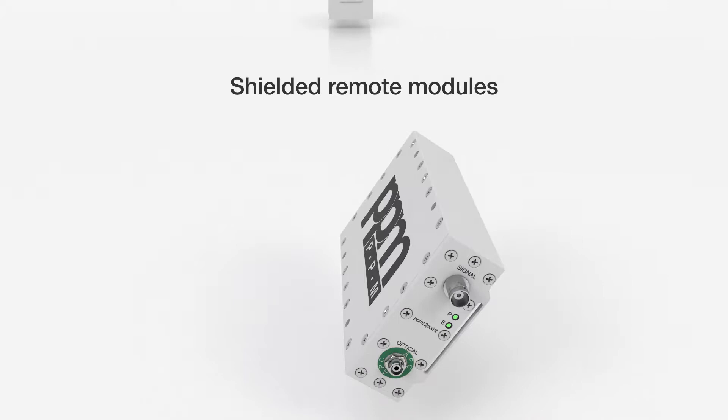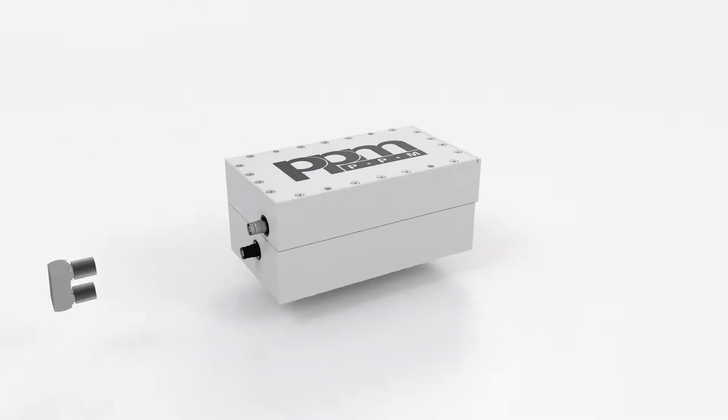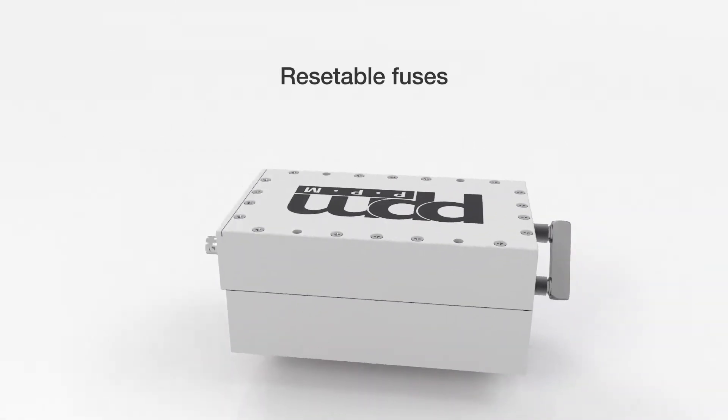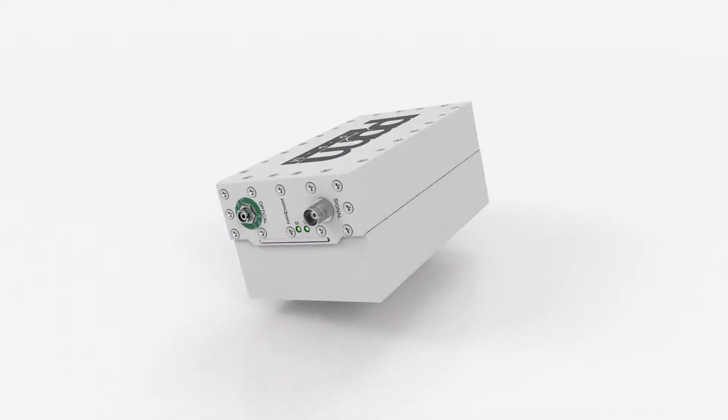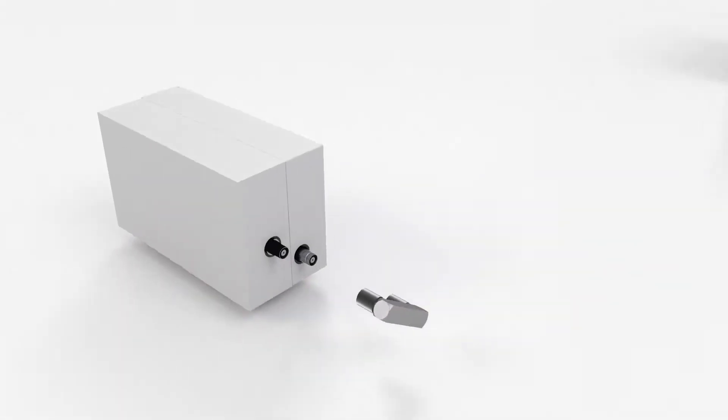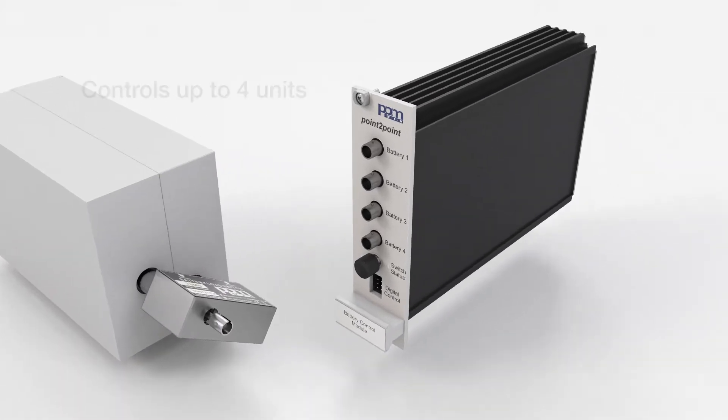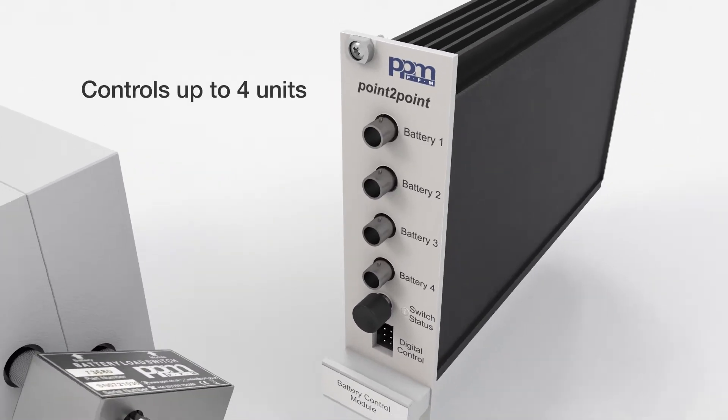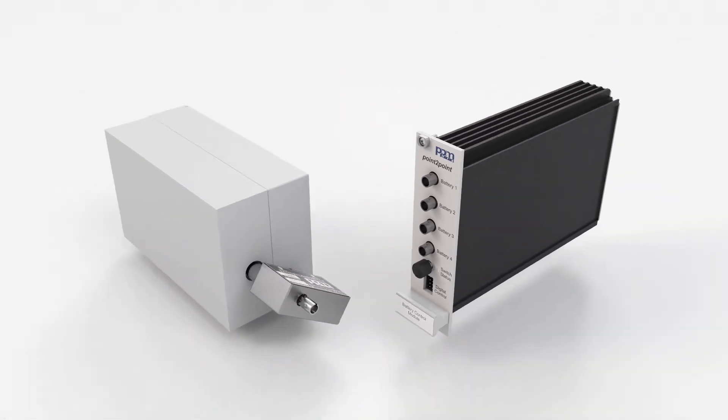Shielded remote transmitter modules use high-capacity battery packs with resettable fuses for over-temperature and over-current conditions. The battery switch controller enables power control for up to 4 remote units to maximize test time between battery chargers.